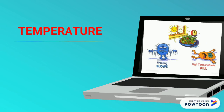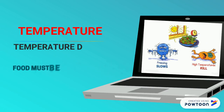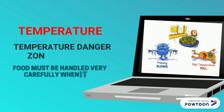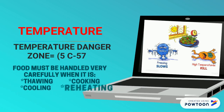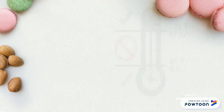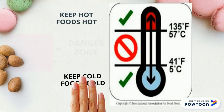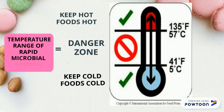Temperature: the danger zone is in the range of 5 degrees Celsius to 57 degrees Celsius. Food must be handled very carefully when it is being heated, cooked, cooled, and reheated. Food is safe if kept below 5 degrees Celsius and above 57 degrees Celsius.